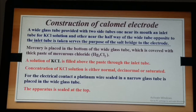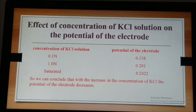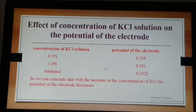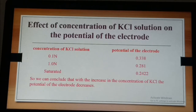We prefer the saturated calomel electrode because it is easy to construct and the saturated solution is easy to prepare. The potential of the electrode varies with the concentration of KCl solution. At 0.1 N, the potential is 0.338 V; at 1 N, it is 0.281 V; and with saturated KCl, it is 0.2422 V. Thus, with increasing concentration of KCl, the potential of the electrode decreases.